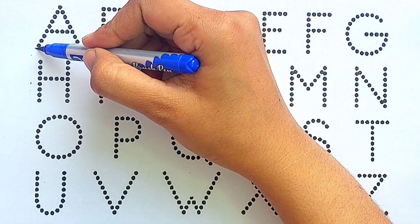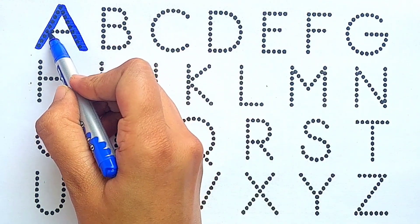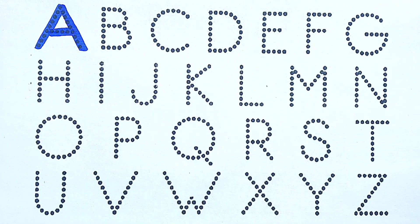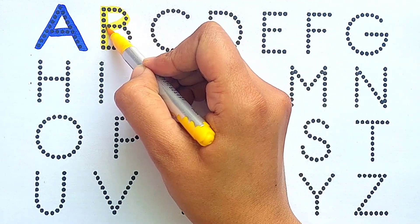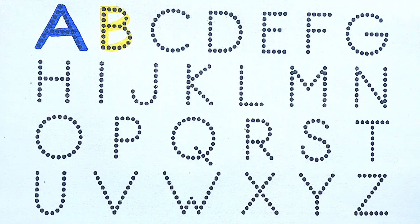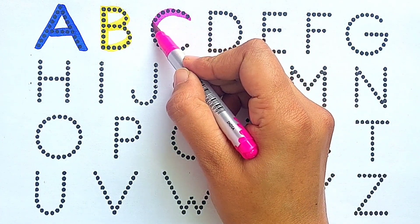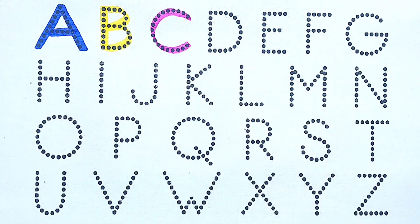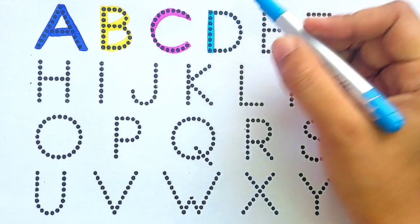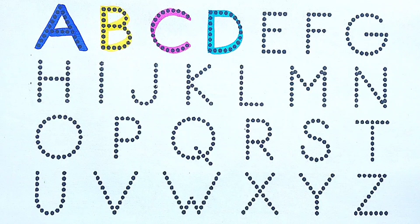Blue color. A, A for alligator. Yellow color. B, B for banana. Pink color. C, C for cow. Sky blue color. D, D for dog.